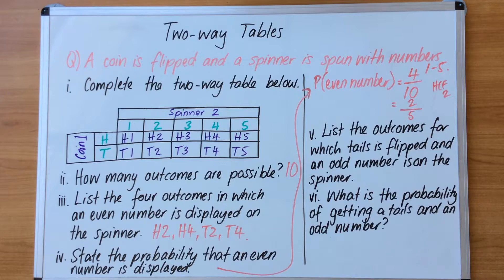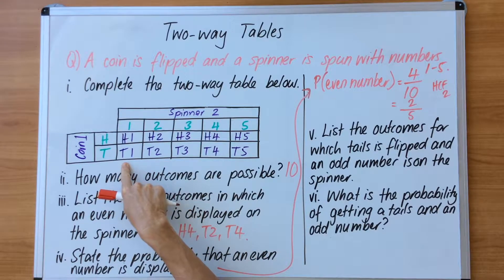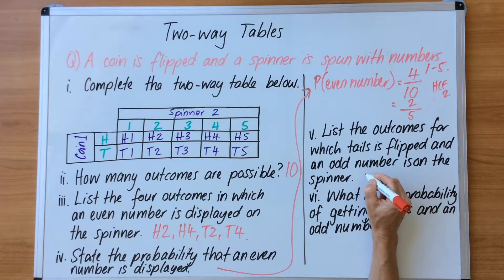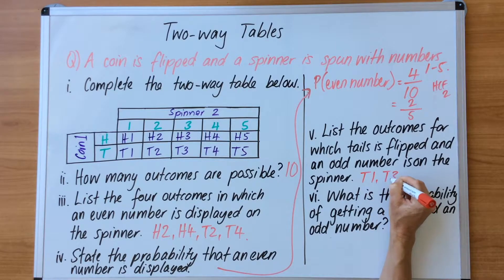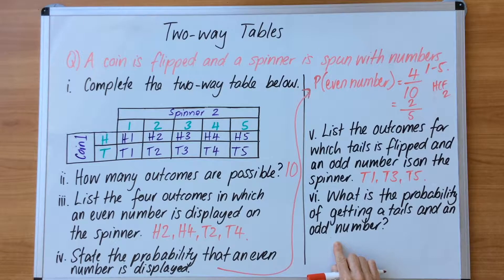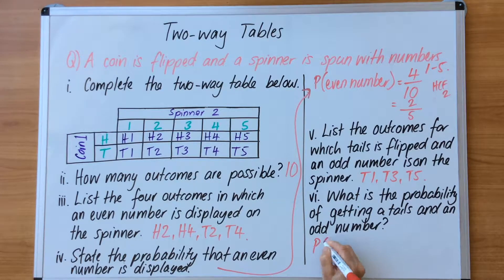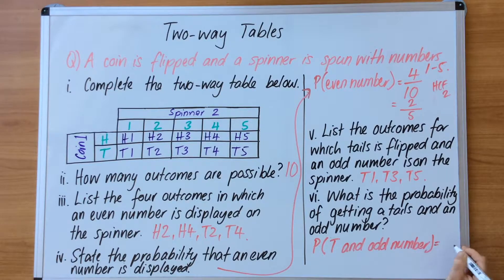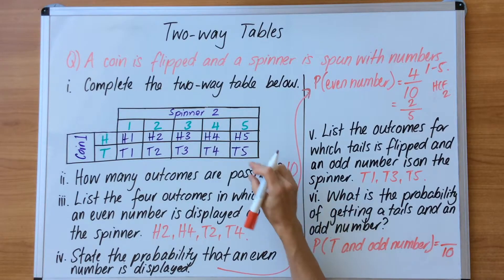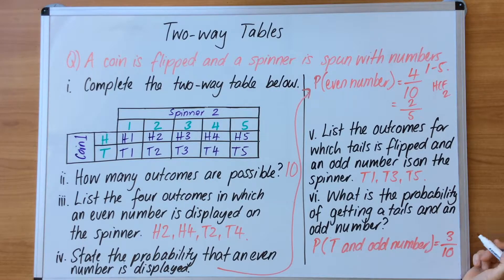The next question says: list the outcomes for which tails is flipped and an odd number is on the spinner. We need a tail and an odd number. Going through the tails section: T1, T3, and T5 are odd and tails. So T1, T3, T5. The last question says: what is the probability of getting tails and an odd number? P(tails and odd number) equals — there are ten total outcomes and three of those combinations, giving us 3 over 10. We cannot simplify because there is no common factor.